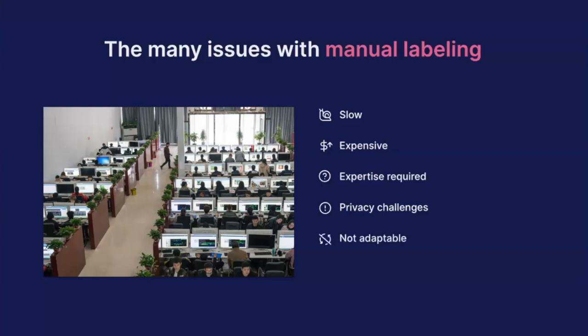Fifth, manual labeling is not adaptable. When you're manually labeling and a business requirement changes — for example, you need to add a new class — you have to go back and relabel everything from scratch one by one. And lastly, it's not governable. Many organizations require governance on their data: where did it come from, is it biased, what data did it go through? Simply receiving labeled data without that provenance is not acceptable.